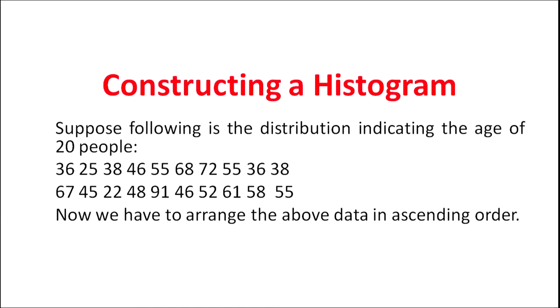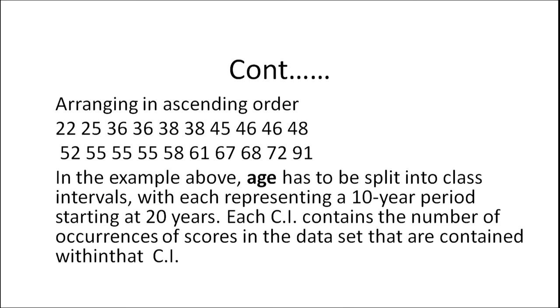I am showing you one example. I have taken a distribution indicating the age of 20 people. This is raw data — we have not arranged it in any order. In the next step, we arrange it in ascending order. We put the minimum value at the first place, which is 22, then 25, 36, 36, 38, and so on, reaching up to 91. From this arranged data, you can calculate the range and determine the appropriate size of the class interval.